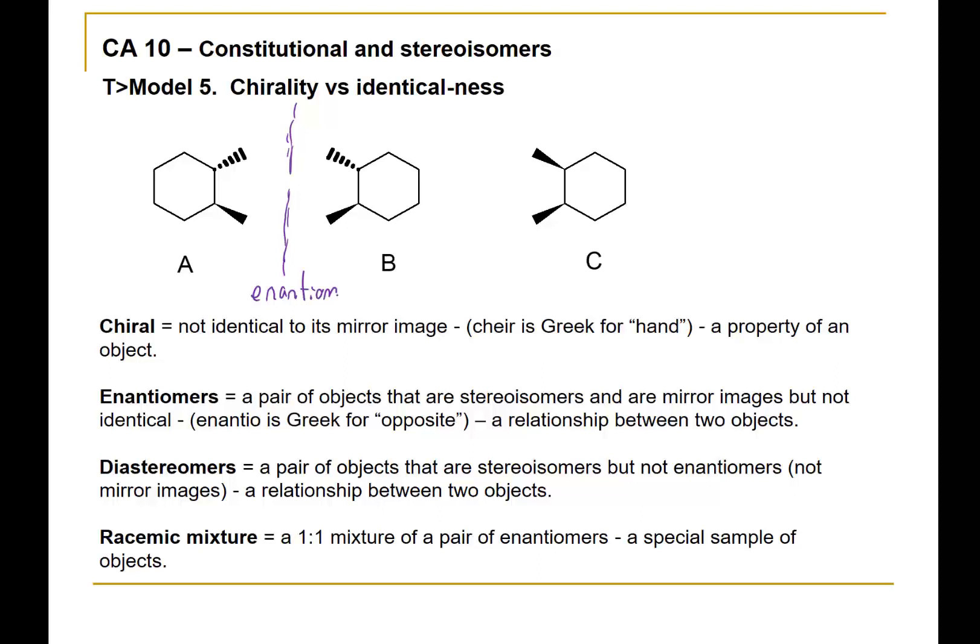One thing to note is that once you've established that a pair of structures are enantiomers, there isn't a third molecule that can fit in. Enantiomers always refers to a pair of molecules.